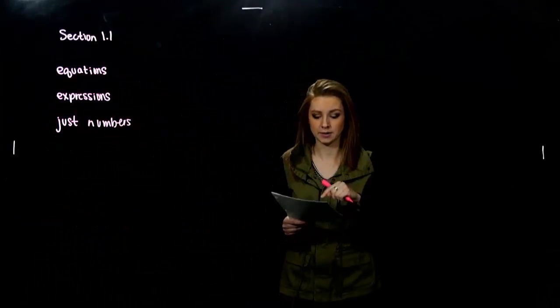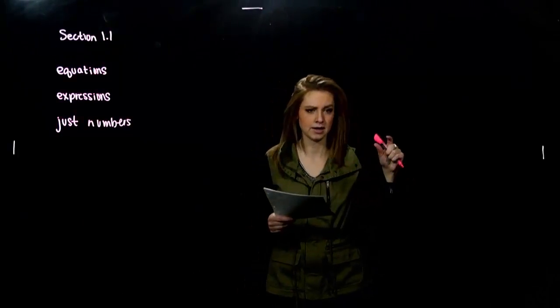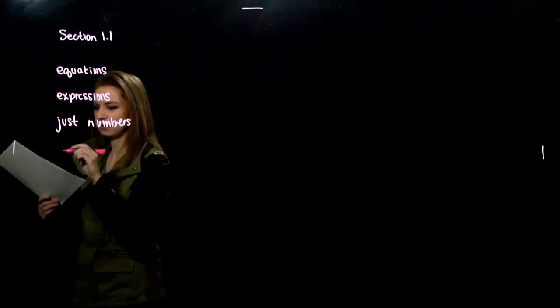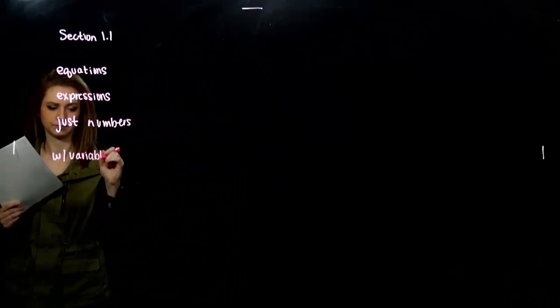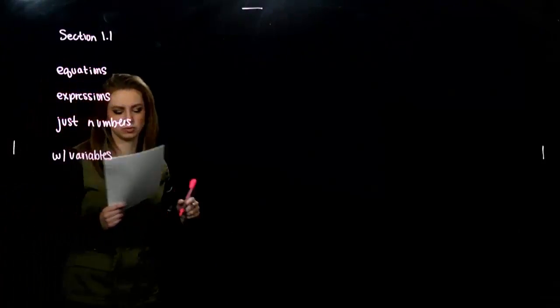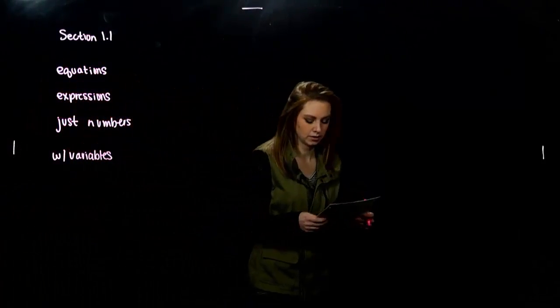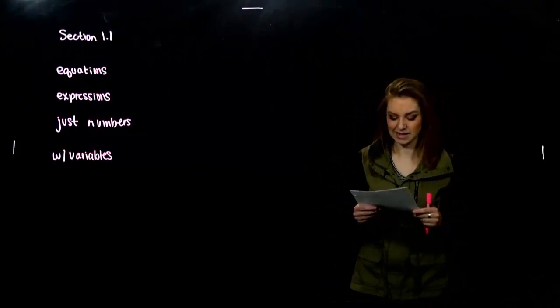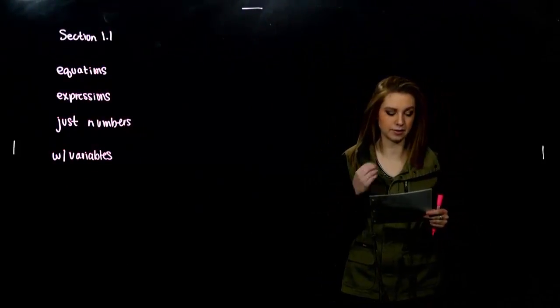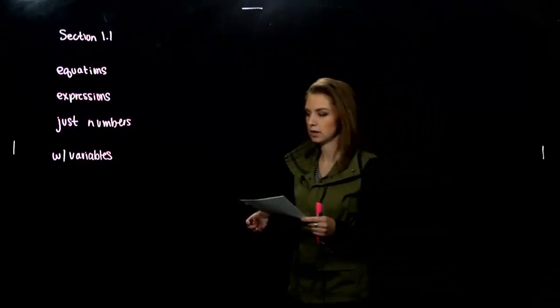But then the algebraic expressions, now we introduce variables. I have an x, a y, a over b. Now we have numbers with variables. So we have some unknowns. That's what variables means. A letter can be dynamic. A variable can be dynamic. It takes on different numeric values at different times. We call those letters variables.